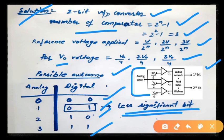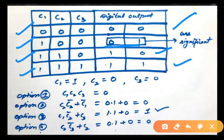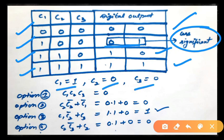When all comparators are low we get output 00; when C1 is high and C2, C3 are low we get 01; when C1 and C2 are high and C3 is low we get 10; when all comparators are high we get 11. For the least significant bit (output 01), the corresponding comparator values are C1 = 1, C2 = 0, C3 = 0. Substituting these into the given options: option 1 gives 0, option 2 gives 0, option 3 gives 1, and option 4 gives 0. The expression must equal 1, so option 3 is the correct answer.